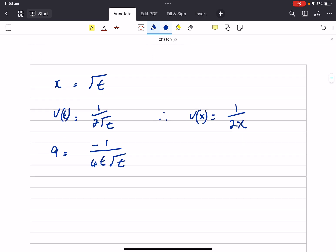Now, what's dv/dx? dv/dx is going to be minus 1 on 2x squared.